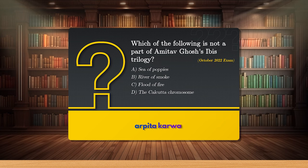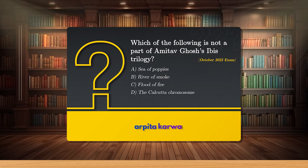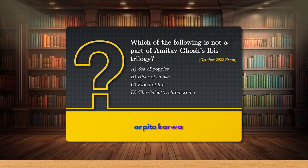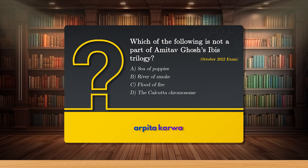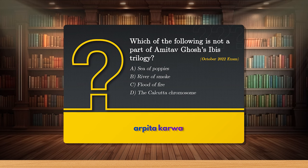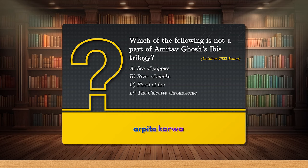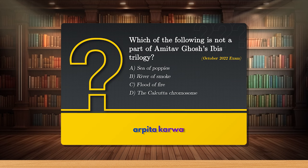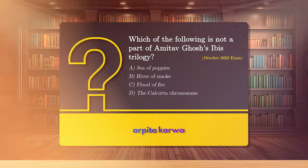Here is a previous year question from this text. The question asked in the October 2022 UGC NET exam was: which of the following is not a part of Amitav Ghosh's Ibis Trilogy? The options were Sea of Poppies, River of Smoke, Flood of Fire, and The Calcutta Chromosome. The answer is The Calcutta Chromosome, as it is not part of this trilogy.